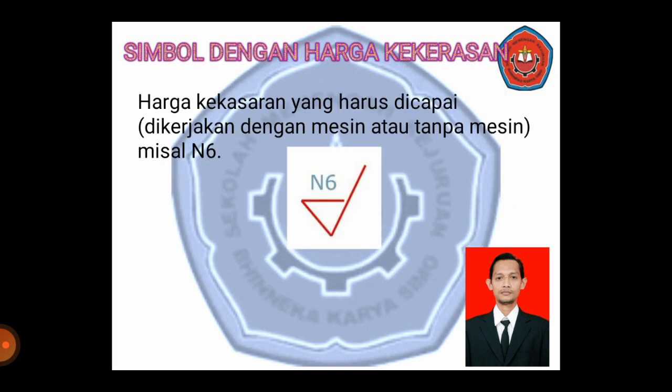Selanjutnya, simbol dengan harga kekerasan. Harga kekerasan yang harus dicapai, dikerjakan dengan mesin atau tanpa mesin. Misalnya N8 — nanti saya sampaikan N8 itu apa, yang harus dikerjakan seperti apa, sampai mencapai kehalusan berapa, seperti itu.